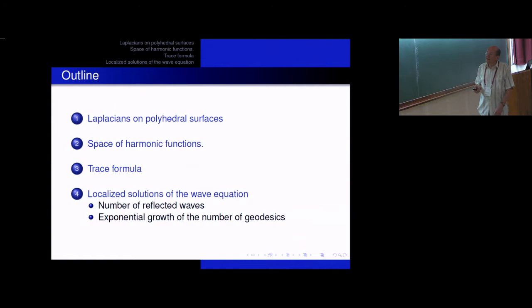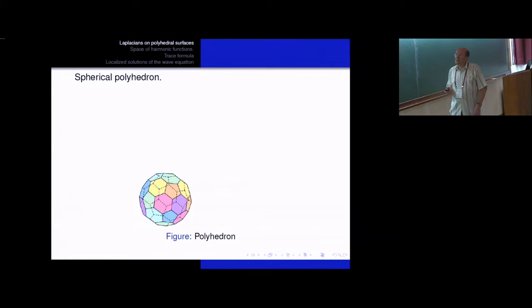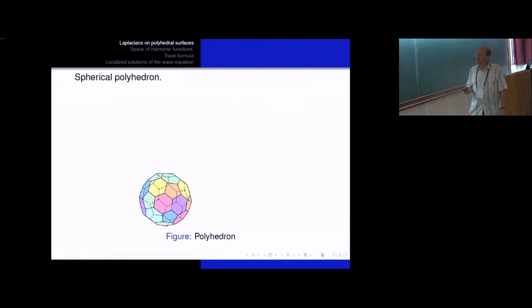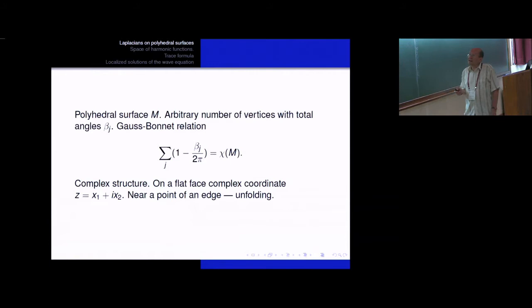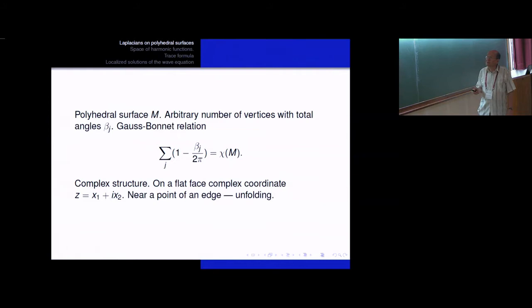I will work with Laplace operators on two-dimensional polyhedral surfaces. Here you can see a polyhedron. By polyhedron I mean a two-dimensional orientable compact surface which is glued from flat polygons using standard rules — the polygons are regularly glued to each other. I will not suppose the polyhedron is spherical; it can be non-spherical with some holes. The number of vertices can be quite arbitrary, and I will not suppose the polyhedron is embedded in three-dimensional space — just an abstract polyhedron. The only condition is the Gauss-Bonnet relation, which states that the sum of the flat angles near all vertices must equal the Euler characteristic of the corresponding surface.